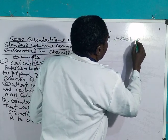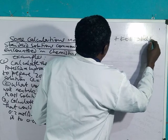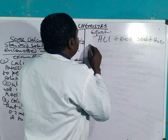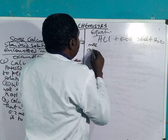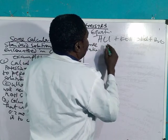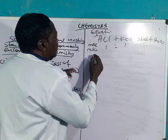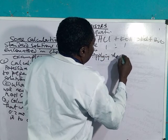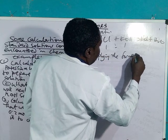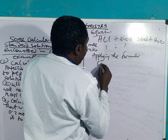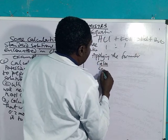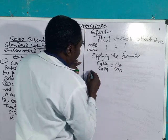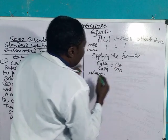You do that by using a stoichiometric equation. The equation: HCl plus KOH gives KCl plus H₂O. The mole ratio of acid to base is one ratio one. Then you now apply the formula: C_A V_A over C_B V_B equals N_A over N_B.